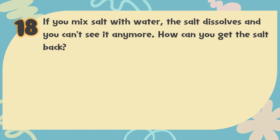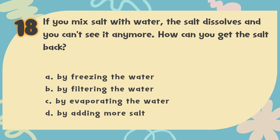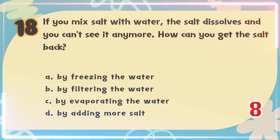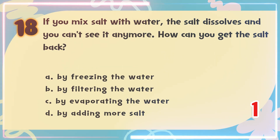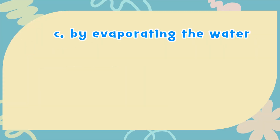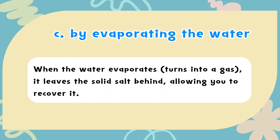Number 18. If you mix salt with water, the salt dissolves and you can't see it anymore. How can you get the salt back? The choices are: A. By freezing the water, B. By filtering the water, C. By evaporating the water, D. By adding more salt. The correct answer is C. By evaporating the water. When the water evaporates — turns into a gas — it leaves the solid salt behind, allowing you to recover it.